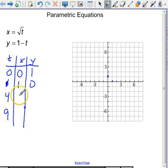At t equals 4, x is 2, and y is negative 3. So I go to 2, negative 3. There's my next point.